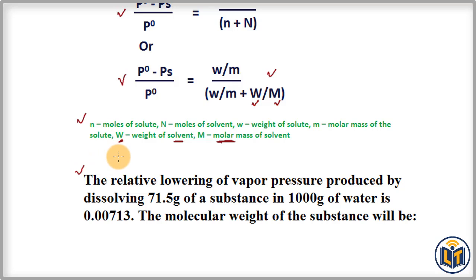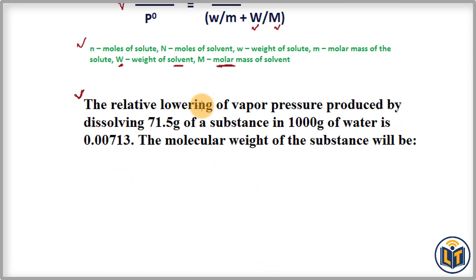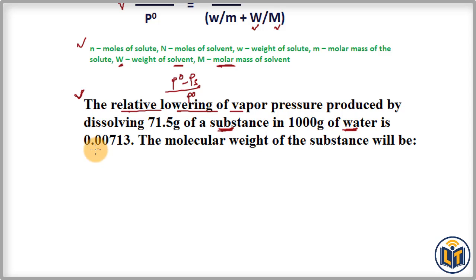Here is a problem that shows how to calculate the molecular weight of a non-volatile solute using Raoult's Law. The problem states that the relative lowering of vapor pressure — meaning (P° - Ps) / P° — produced by dissolving 71.5 grams of a substance in 1000 grams of water is 0.00713. This very small value indicates the solution is quite concentrated.